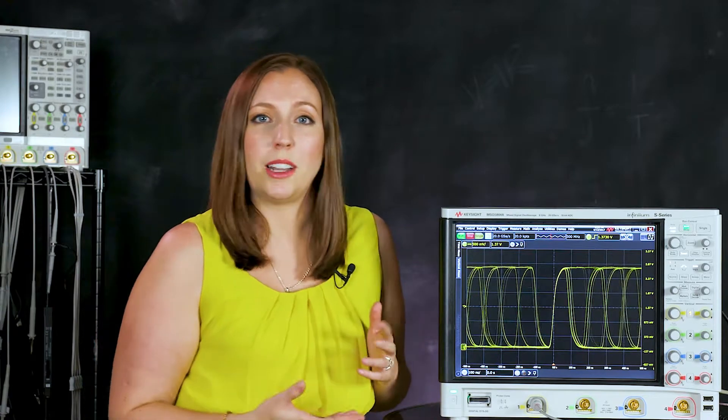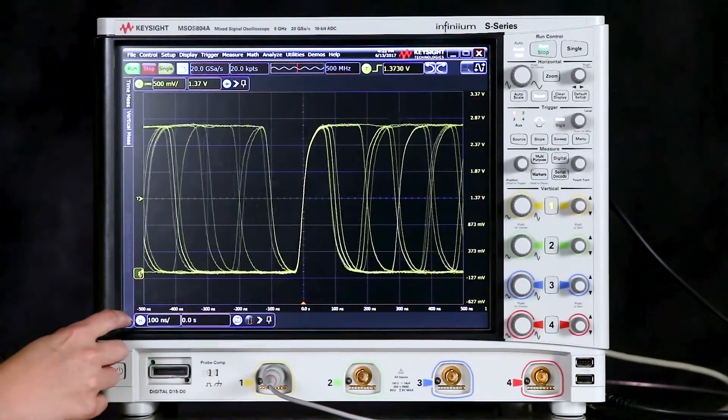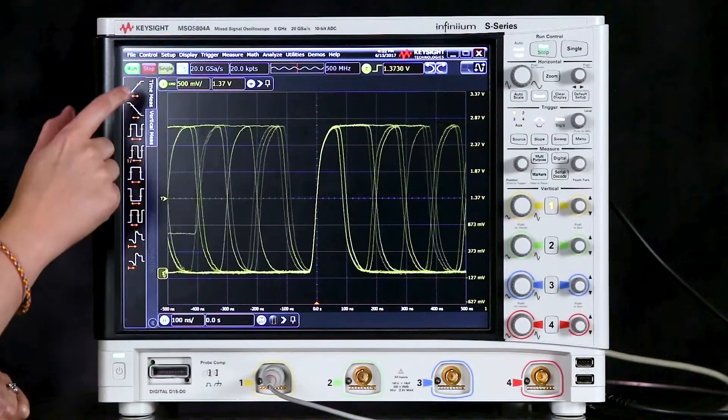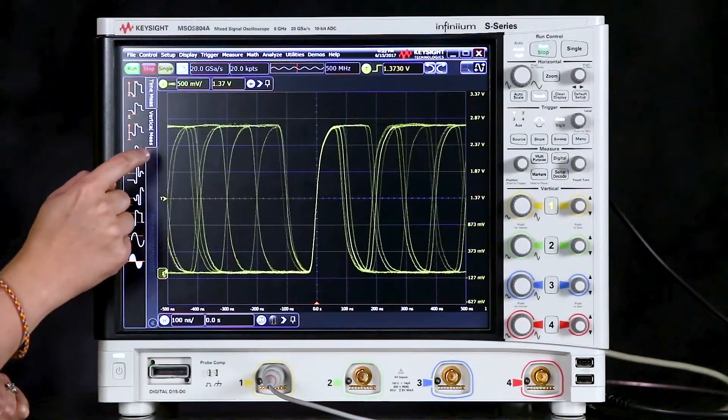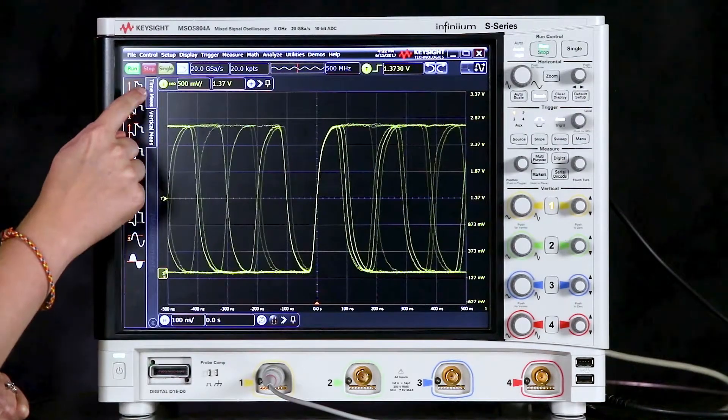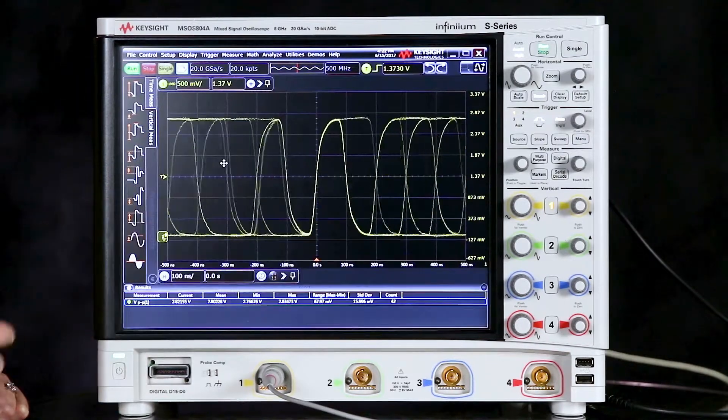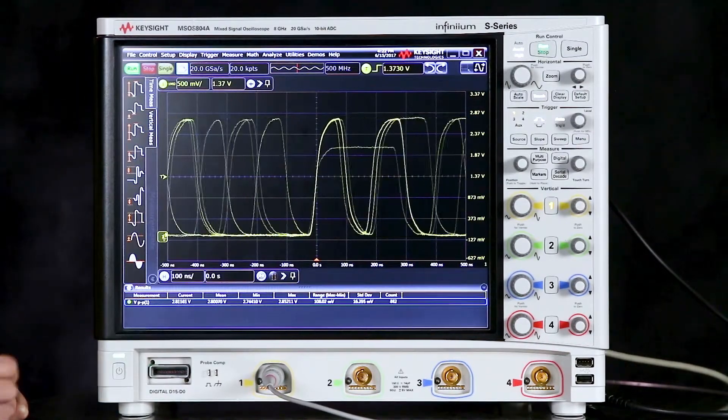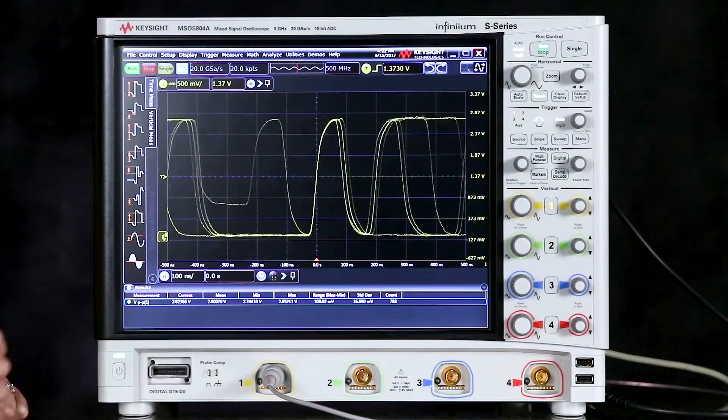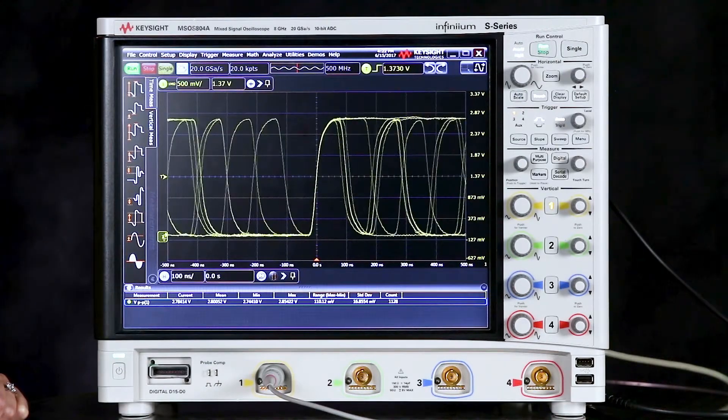So first I want to make a voltage peak-to-peak measurement to find out what the voltage is normally on my signal. So we'll come over here and we'll use the quick drag and drop measurements menu. And I want to make a vertical measurement and I'll grab this voltage peak-to-peak and drop it onto the waveform. That tells me that I'm getting 2.8 volts peak-to-peak on the signal normally.